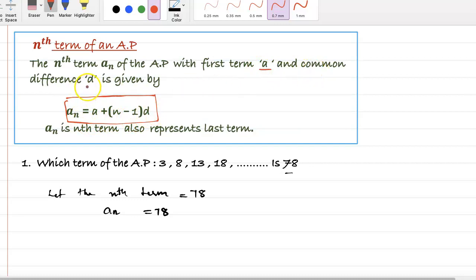The nth term is 78, so let us take the nth term here. We can write the formula: a plus (n minus 1) into d is 78.